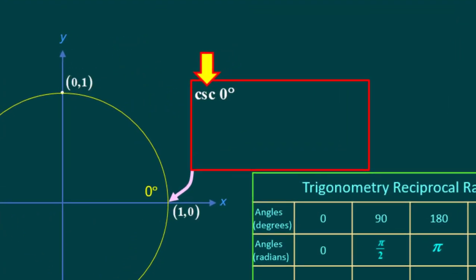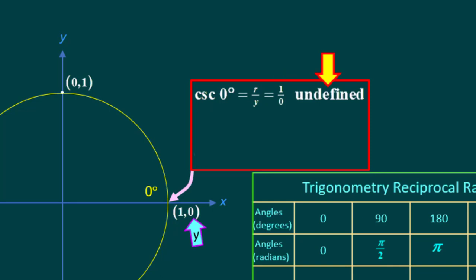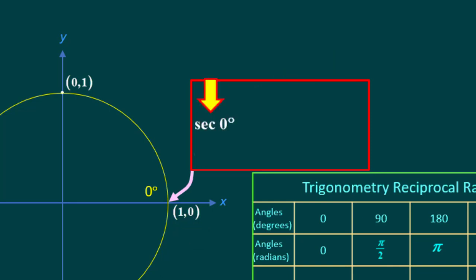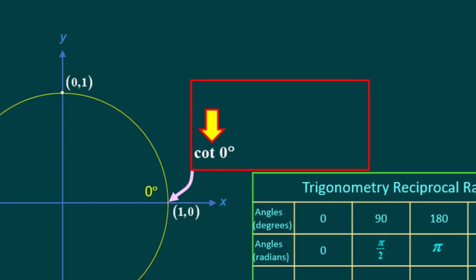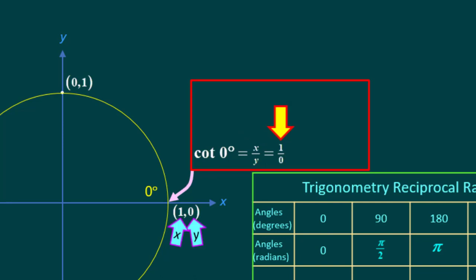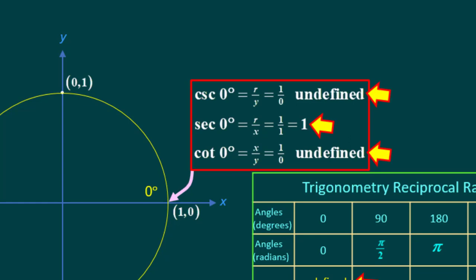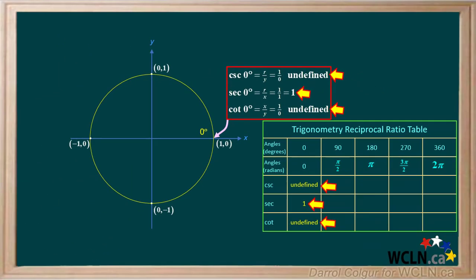We'll start with the cosecant of 0 degrees. The sine is y over r, so the cosecant is the reciprocal, or r over y, which is 1 over 0, and 1 over 0 is undefined. The secant of 0 degrees is r over x, the reciprocal of the cosine. r and x are both 1, so the ratio is 1 to 1, which is equal to 1. The cotangent of 0 degrees is the reciprocal of the tangent, or x over y, which is 1 over 0, and 1 over 0 is undefined. We'll enter these three values in our table for the reciprocal ratios.